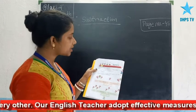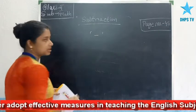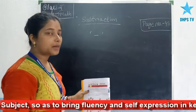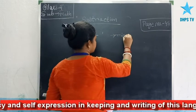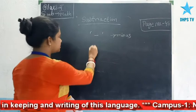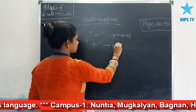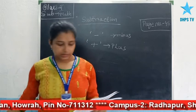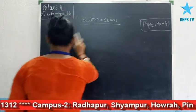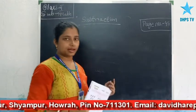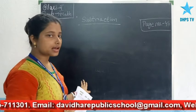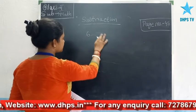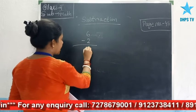The sign used to show subtraction is minus. When you subtract two numbers you get an answer called the difference. For example, 6 minus 2 — you subtract 2 from 6 and the answer is 4.